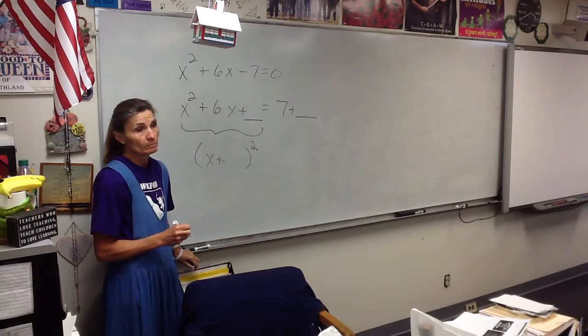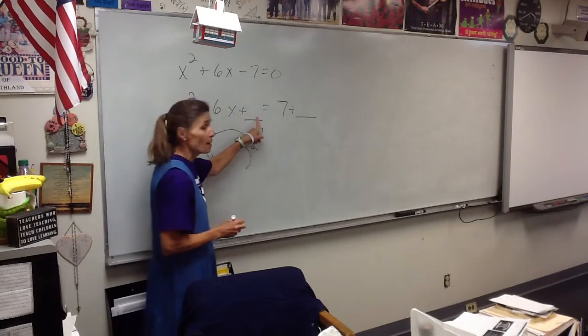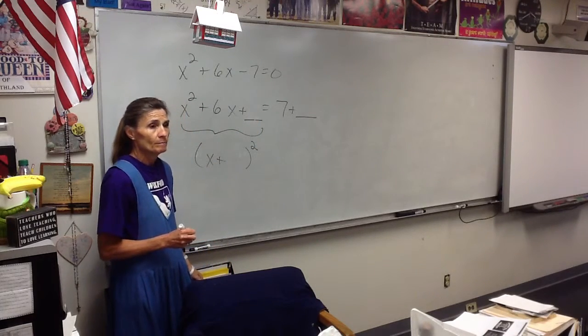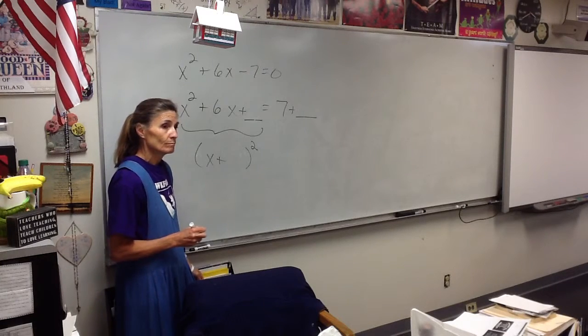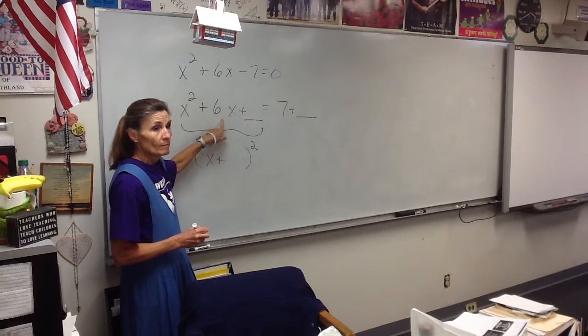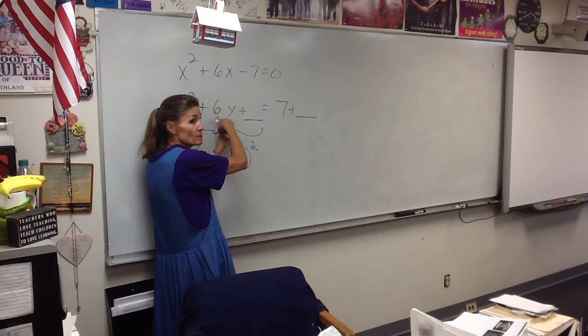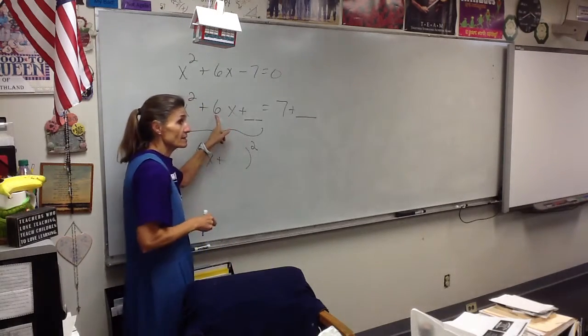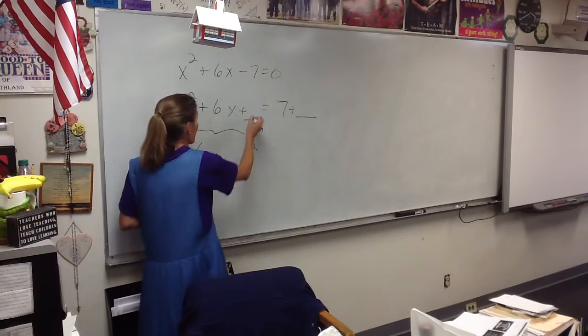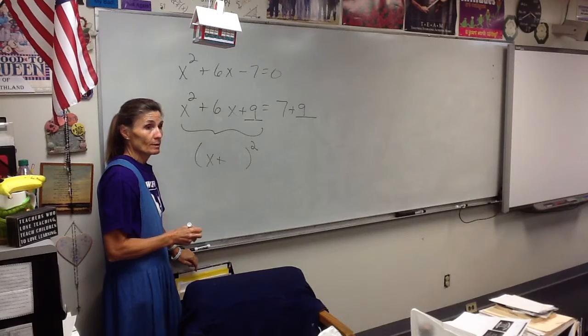By the square. Well, we do square. How do we find the number that completes the square? Somebody help you out, Lexi. You take half of the 6. Okay, Austin, we take half of this number and we square it. So half of 6 is 3 and 3 squared is 9. So we are going to add 9 to both sides.